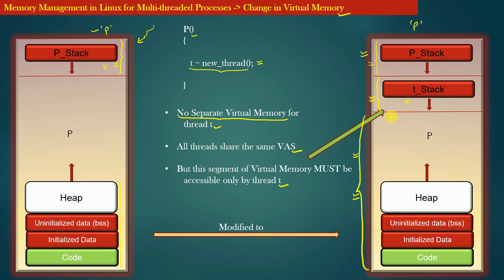The stack memory of process P is preserved and used by process P for its execution. The entire process virtual address space, from here to the bottom, is shared by process P as well as thread T. It is for this reason that a thread can also modify the heap memory of a process, and those modifications in the heap memory will be visible to other threads or the parent process. The only change in the process virtual address space is the allocation of new stack memory when a new thread is created.